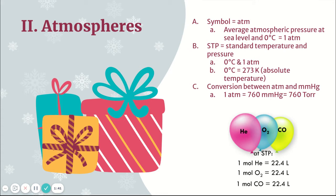Atmospheres, or atm, is a unit we very commonly use. At sea level and zero degrees Celsius, pressure equals one atm — so one atm was defined to coordinate with that level of the atmosphere and temperature. Standard Temperature and Pressure, or STP, is a term you'll hear a lot. It means zero degrees Celsius and one atm.